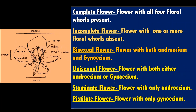We can learn many terms associated with this flower. This flower shows all four whorls — calyx, corolla, androecium, and gynoecium — therefore a flower with all four whorls is called a complete flower. If one or more whorls are missing, such a flower is called an incomplete flower.